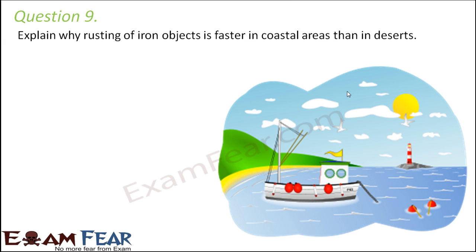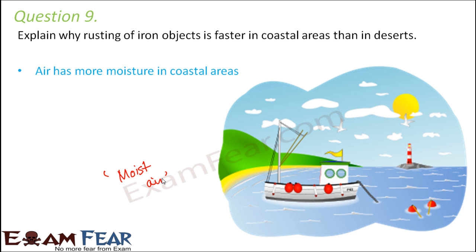Question number 9: Explain why rusting of iron objects is faster in coastal areas than in deserts. In coastal areas, water bodies like the sea are nearby, so there is a lot of moisture in the air. In deserts, there is hardly any water, so the air is very dry. The presence of moist air increases the possibility of rusting, so rusting is more common in coastal areas.